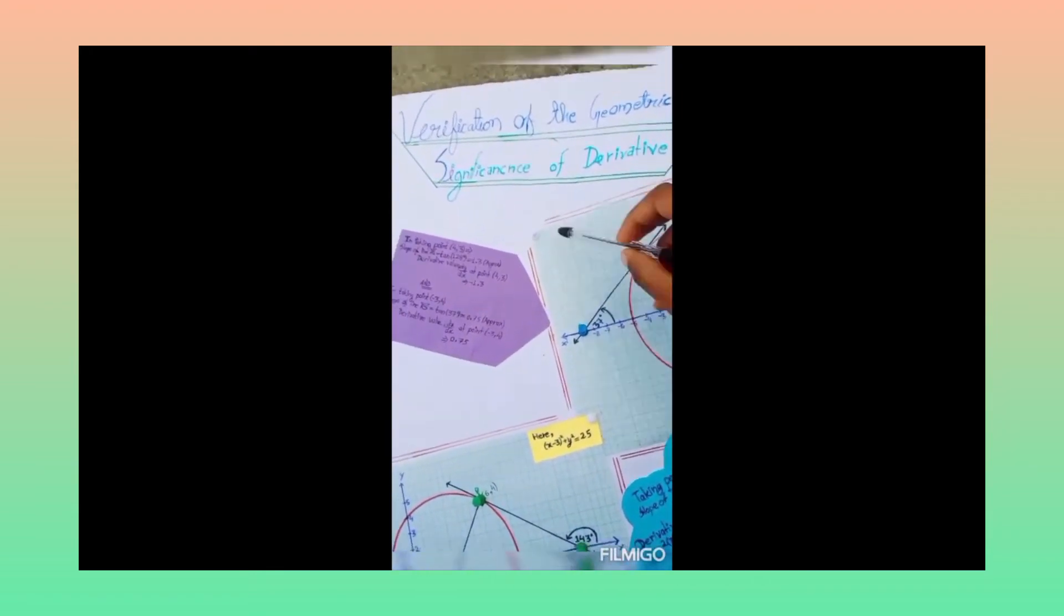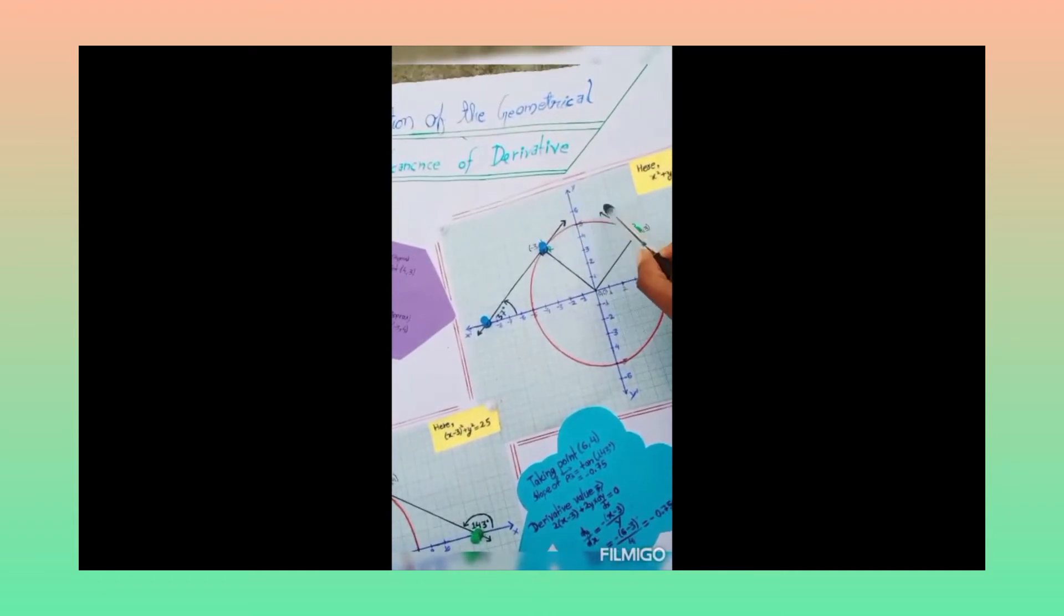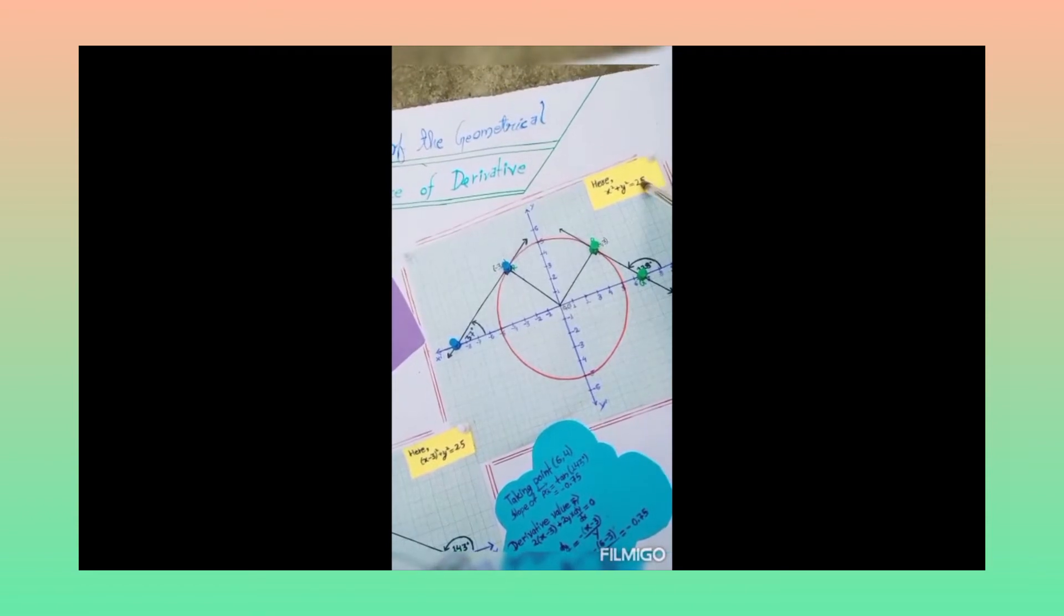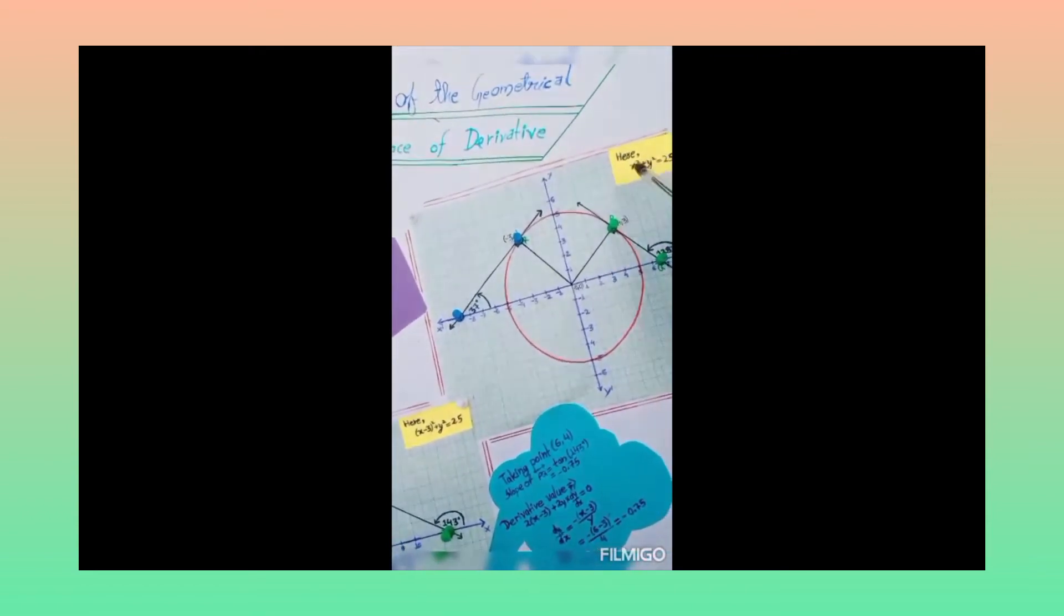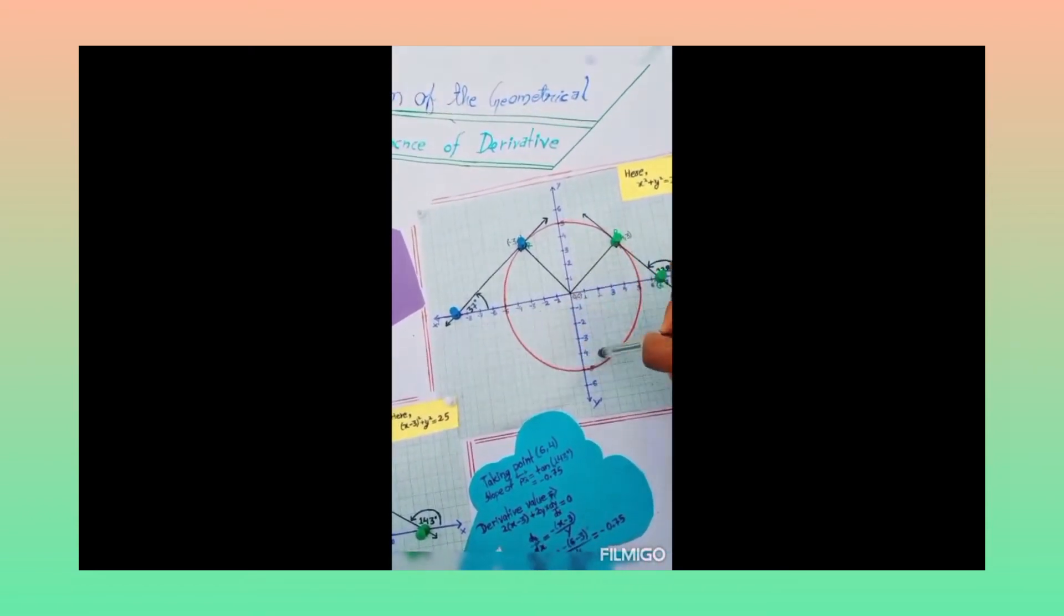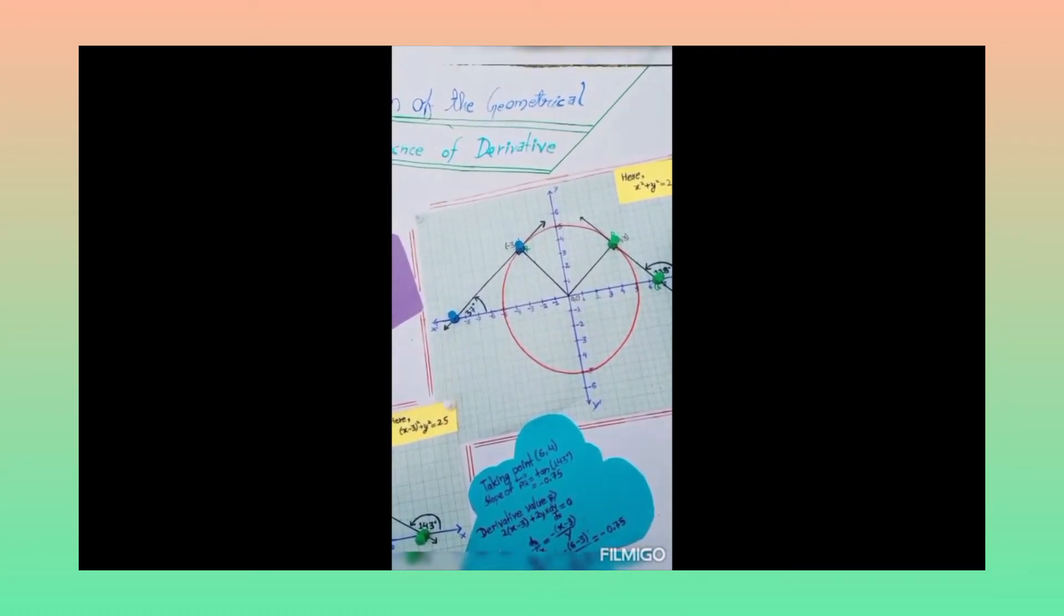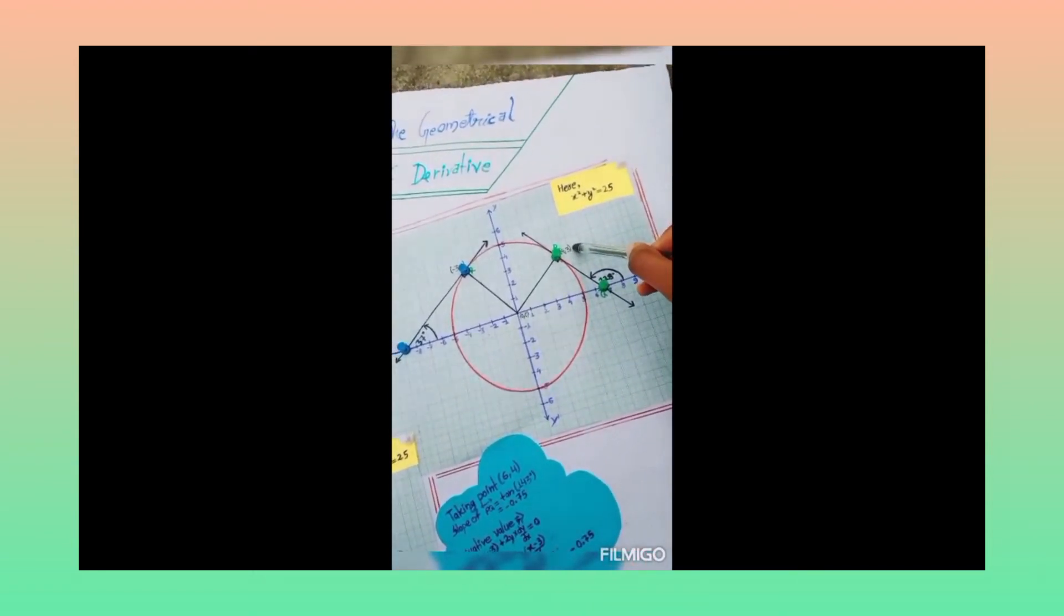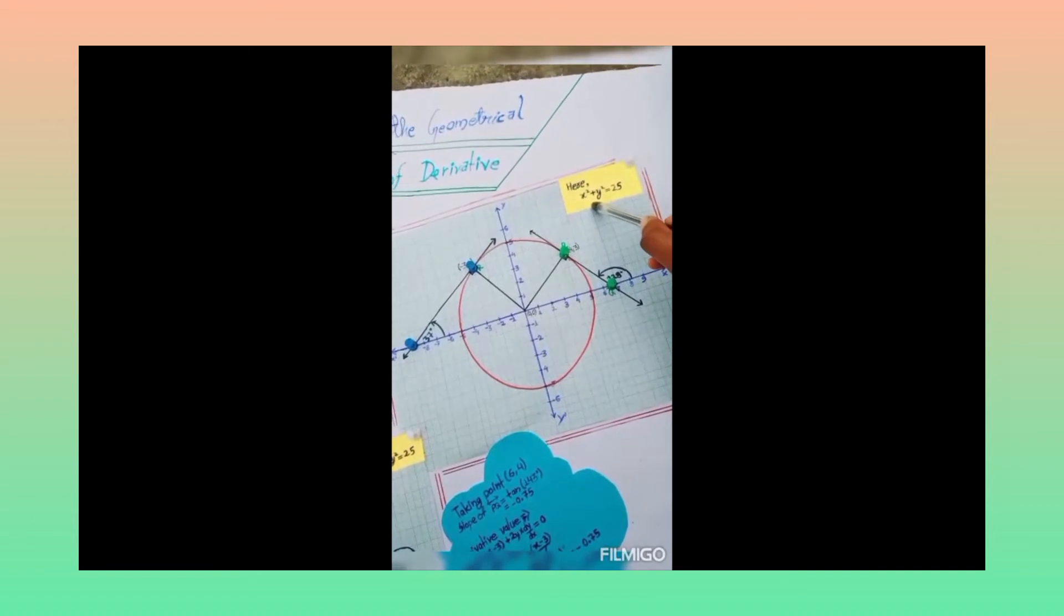For this we have to take three graphs and this is the first one. Here for this circle, the equation is x square plus y square is equal to 25. Any point on this circle satisfies the equation x square plus y square is equal to 25. So we take point P at 4,3, which also satisfies this equation.